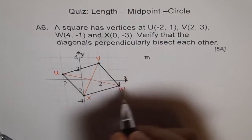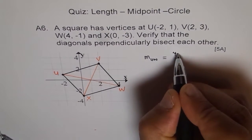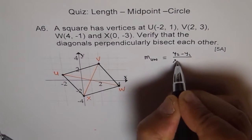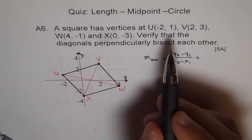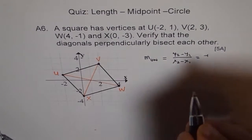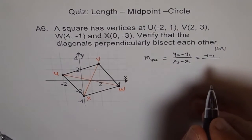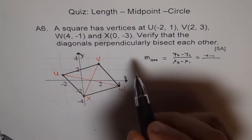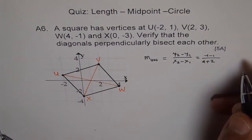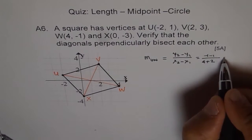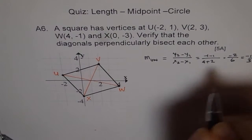Find slope of diagonal UW. m_UW should be (y2 - y1) / (x2 - x1). For U(-2, 1) and W(4, -1): that is (-1 - 1) / (4 + 2), which gives us -2/6, which is equal to -1/3. That is the slope of UW.